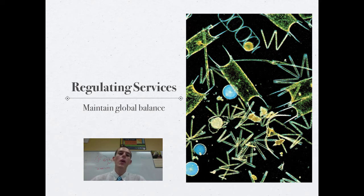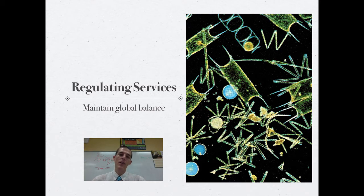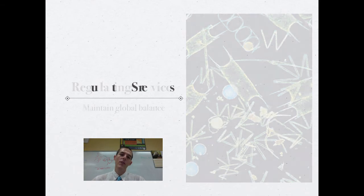Obviously, forests and other plants also take in carbon dioxide too, so that would be a regulating service in that they are helping to regulate the amount of carbon dioxide that's in the atmosphere and probably indirectly also regulating climate change and our impact on the atmosphere. Any service that helps to balance out the planet is known as a regulating service and that is also an ecosystem service.